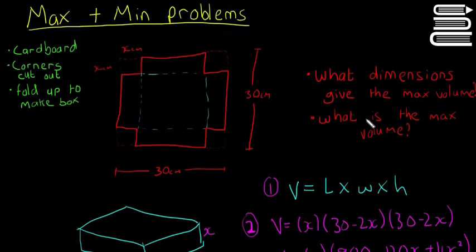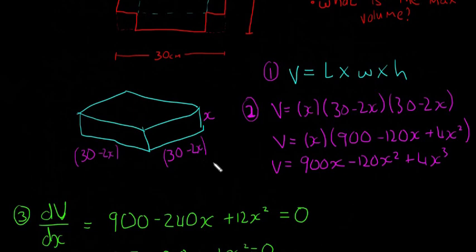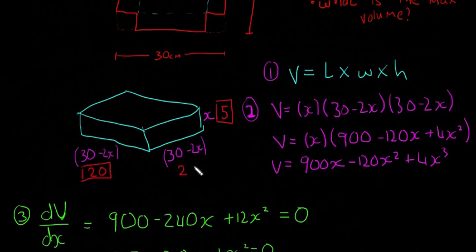So what are the dimensions that give the maximum value then? We're going to be X and then 30 minus 2X and 30 minus 2X. So I'm just going to write these in here. So it's going to be 5. I'll put it in a square. 30 minus 2X. So 30 minus 2 times X is going to be 20. And this is going to be 20 as well. Okay, so they are the dimensions that give the maximum volume.